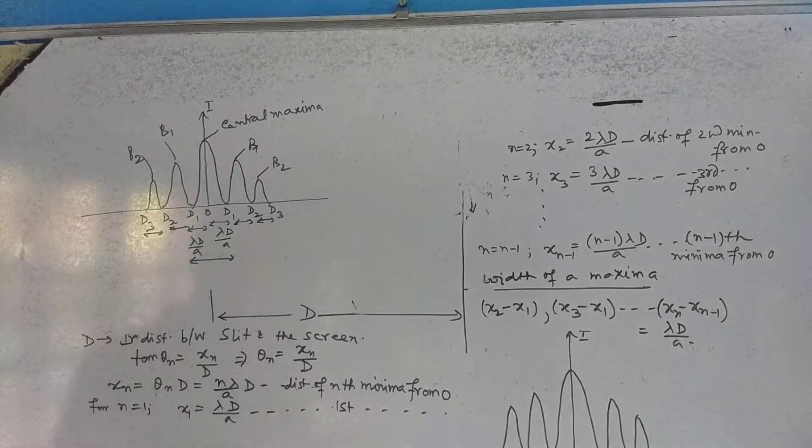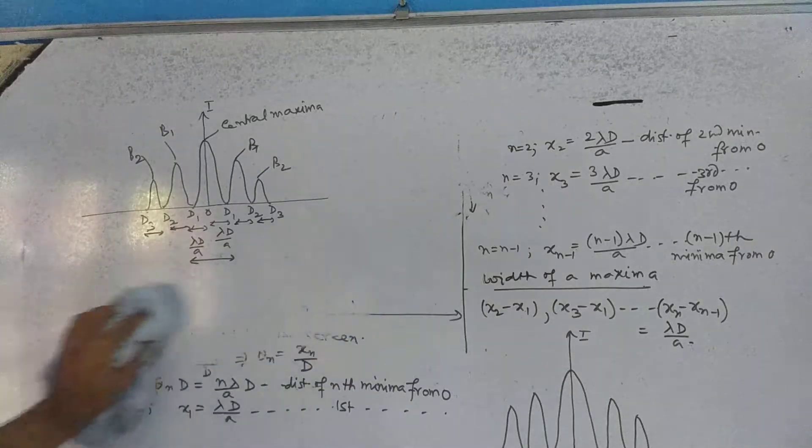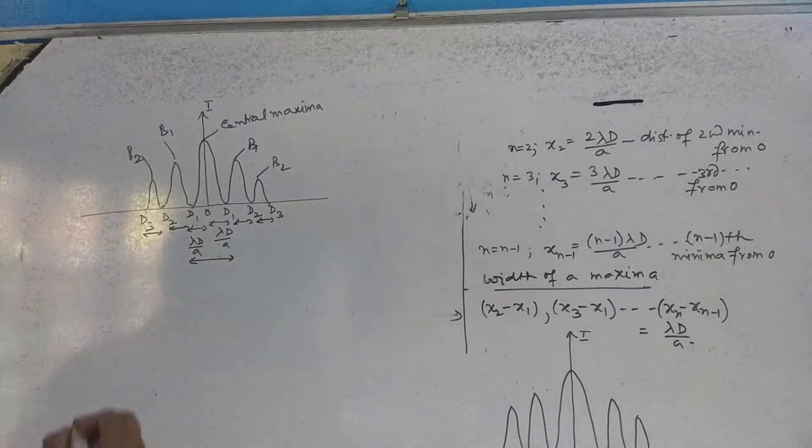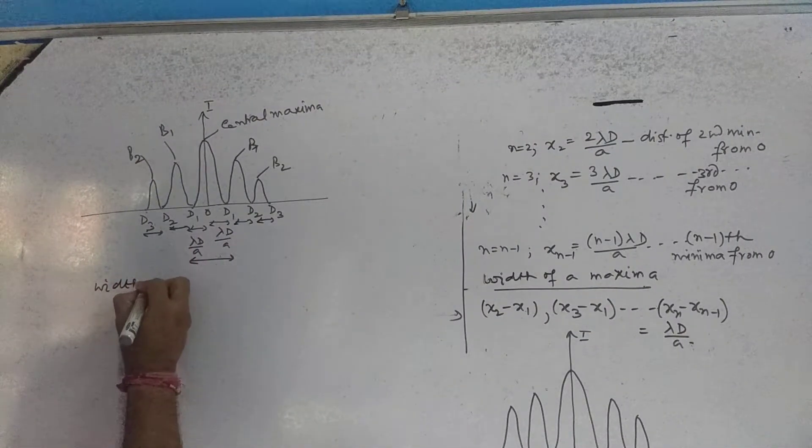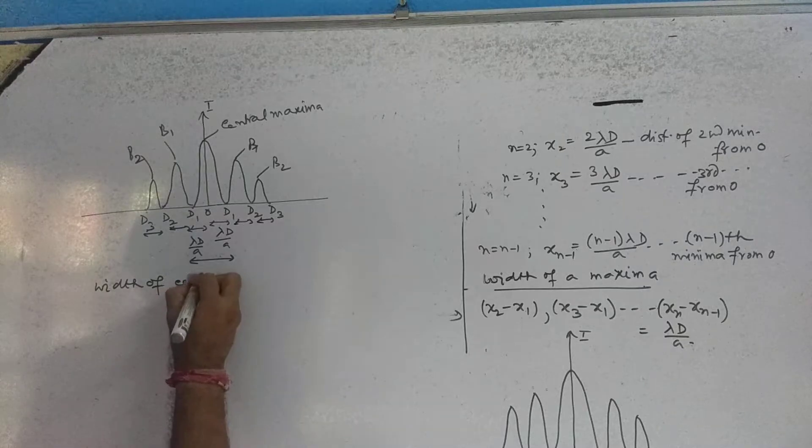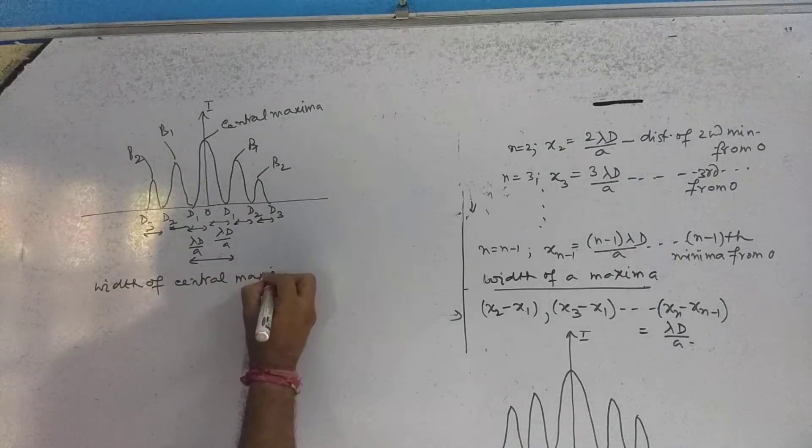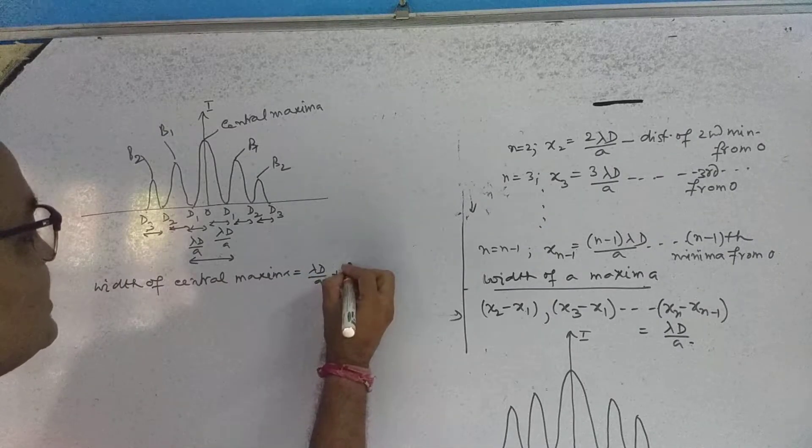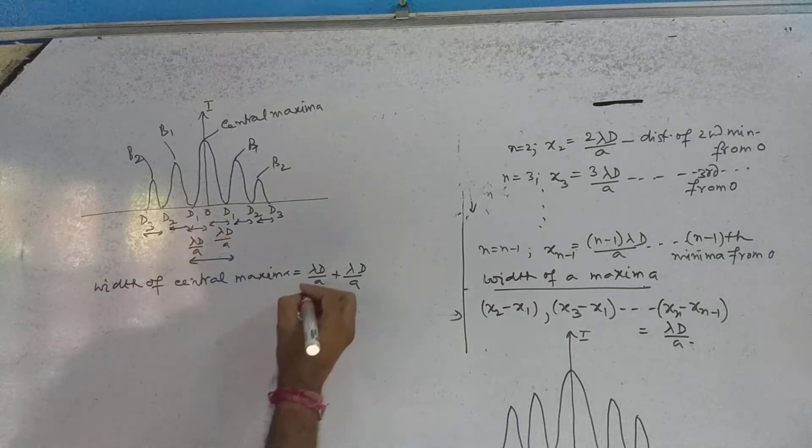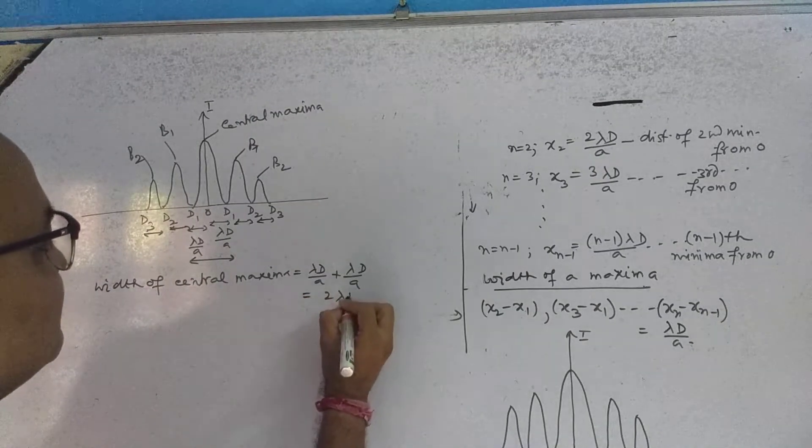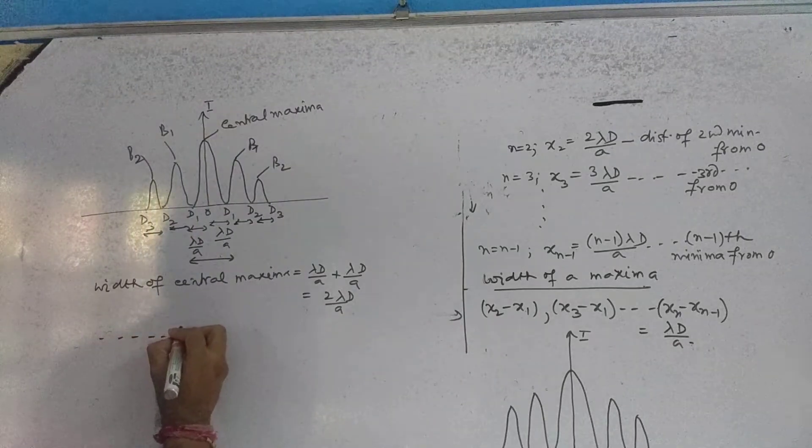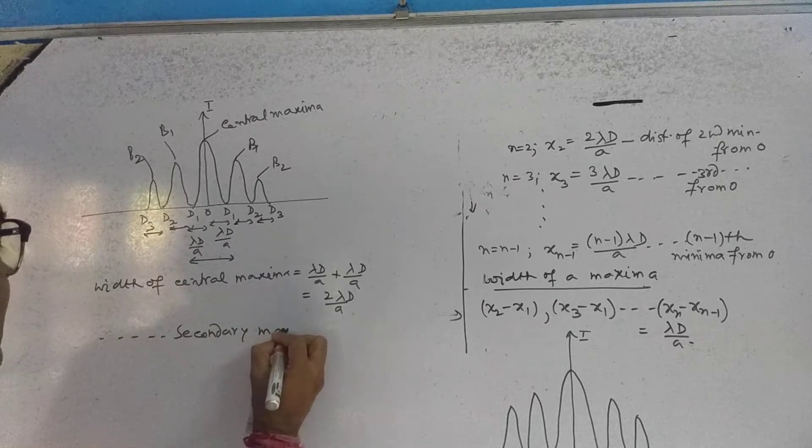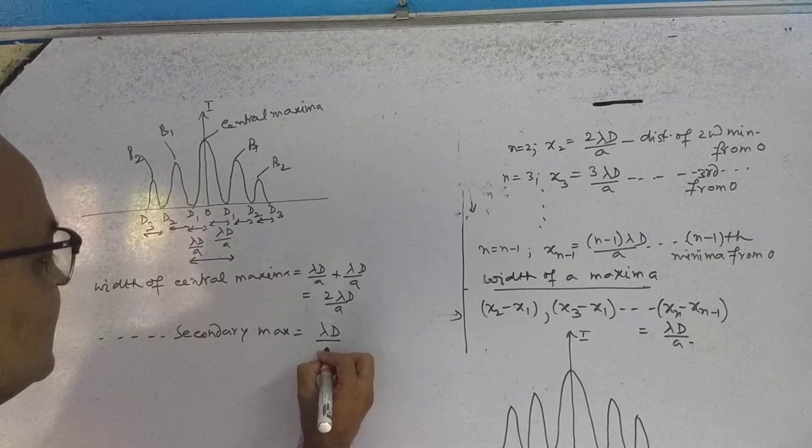This means that if we say width of central maxima equals lambda d by a plus lambda d by a, that is twice lambda d by a, and width of secondary maxima, simply lambda d by a.